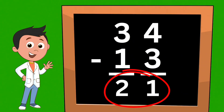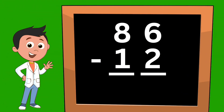Let's try another one. How about eighty-six minus twelve? Let's start on the right. We have six minus two. Six minus two equals four.